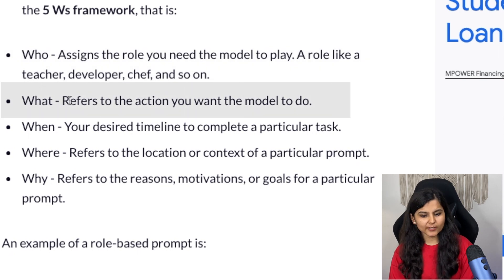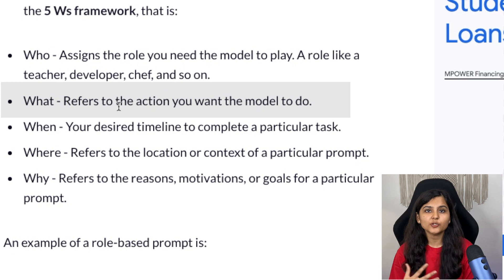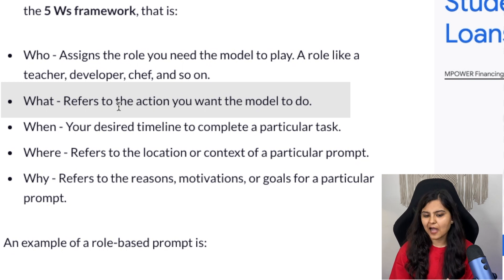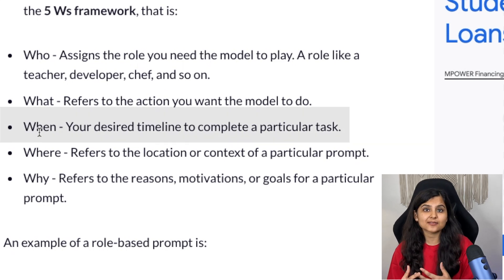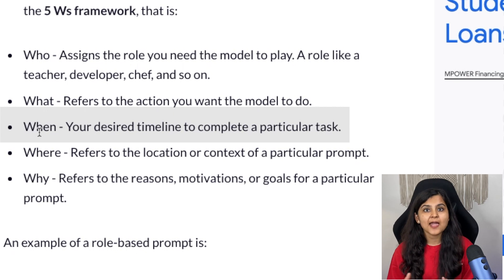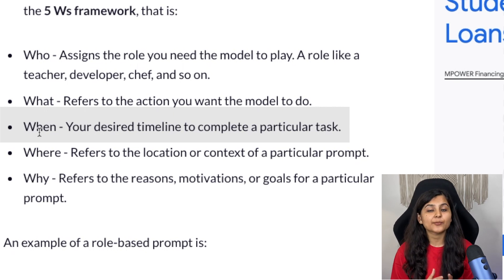The next W is 'what' — what action we want our model to take. We want it to make a study plan for us for web development. Then there is 'when' — the desired timeline. I'll say I want to become a web developer and get a job in just three months, and I'll also give the timeline for how many hours per week I can spend.